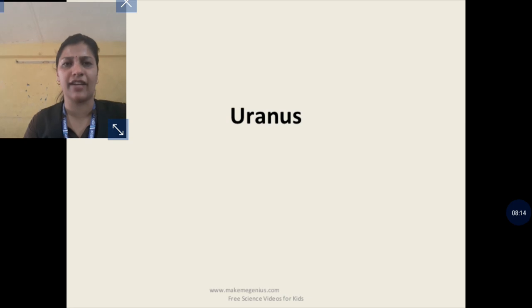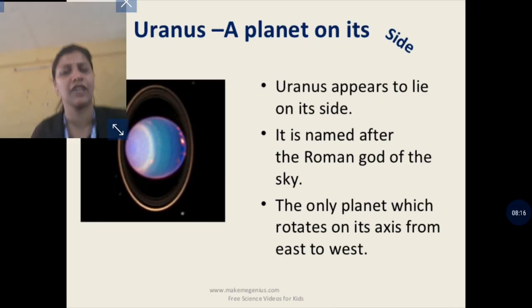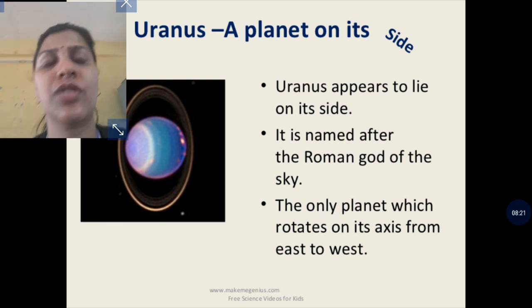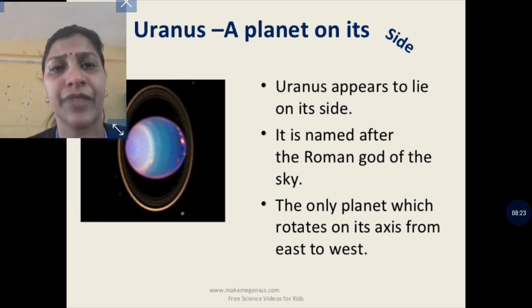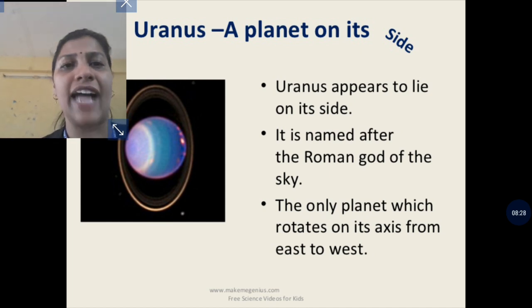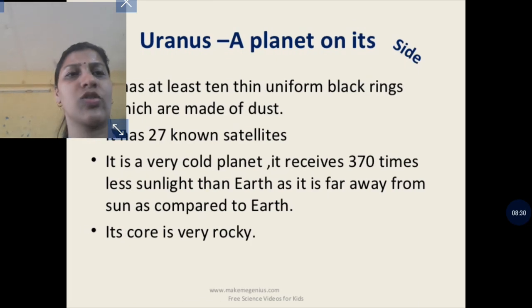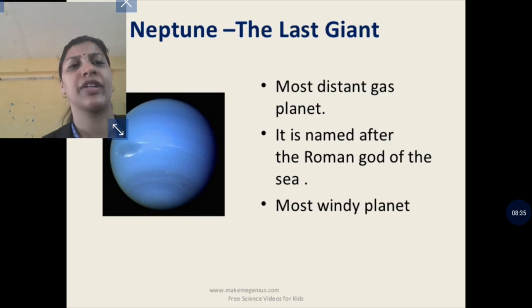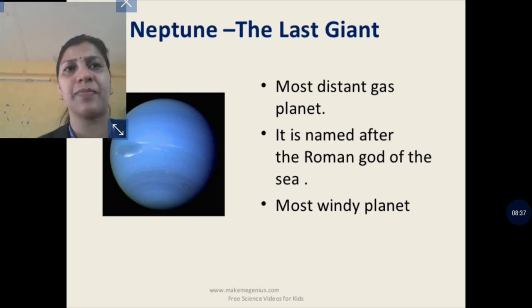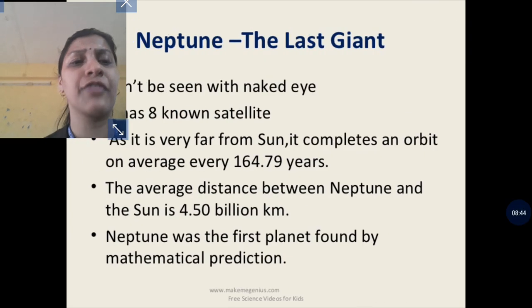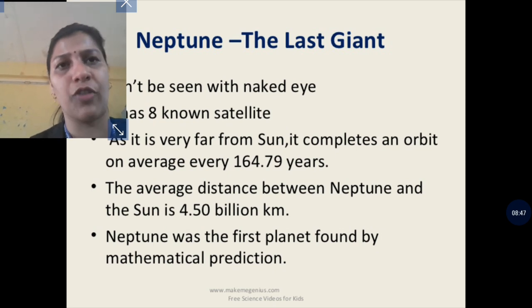Uranus is the seventh planet in our solar system. It is not visible with the naked eye; we have to use a telescope. Its axis is inclined — slightly tilted — so it is called the rolling planet. Neptune is the last planet. It is very dark, cold, and windy, and has the longest period of revolution.